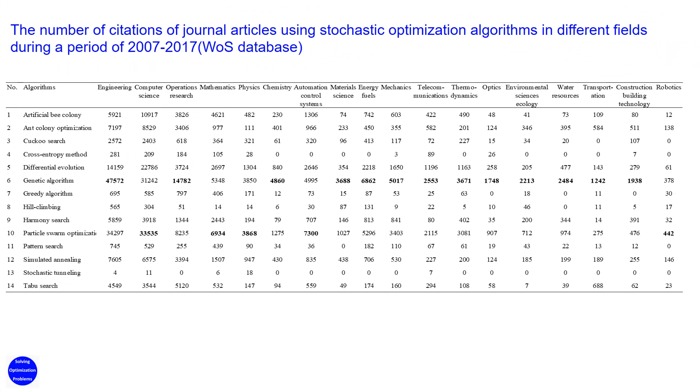In terms of citations, genetic algorithm is the most highly cited in 13 research fields, while particle swarm optimization algorithm is the most highly cited in 5 research fields.